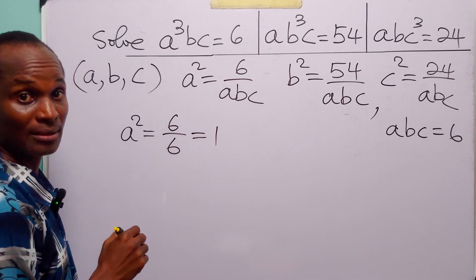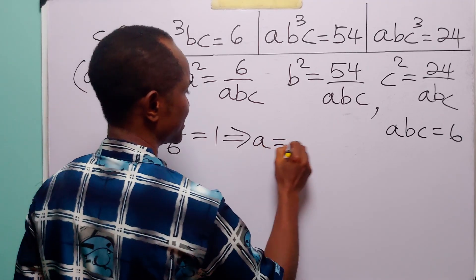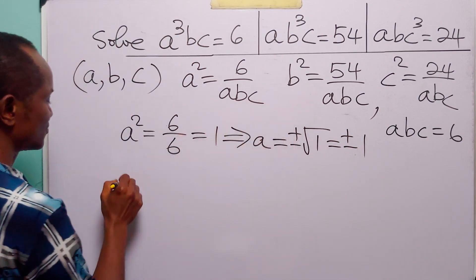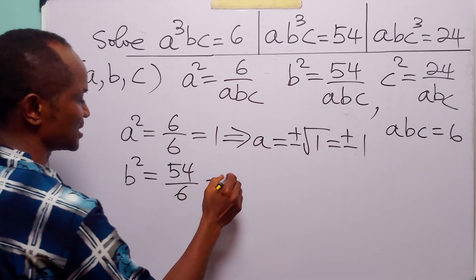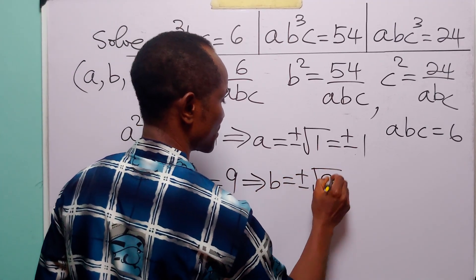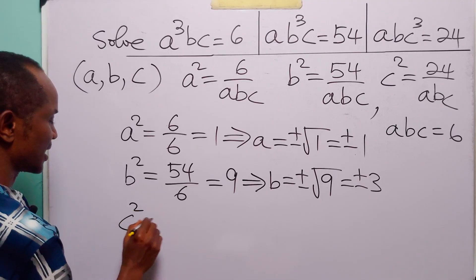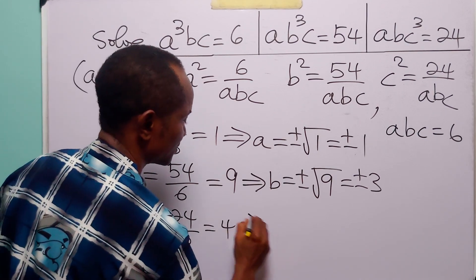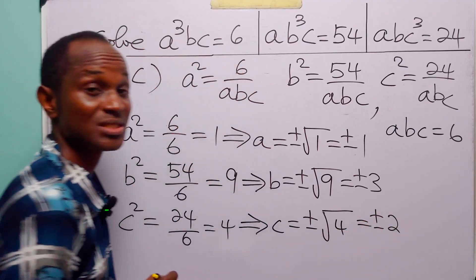A squared is equal to 1, and to find A we take the square root of both sides of this equation — A is equal to plus or minus the square root of 1, which is plus or minus 1. We have that B squared is equal to 54 over 6, which is equal to 9, so B is equal to plus or minus the square root of 9, which is plus or minus 3. And C squared is equal to 24 over 6, which is equal to 4, so C is equal to plus or minus the square root of 4, which is plus or minus 2.